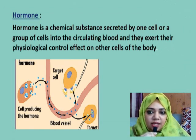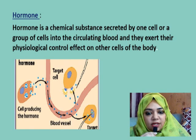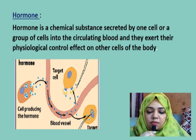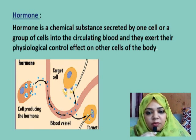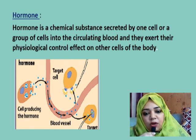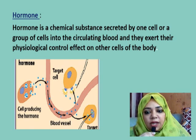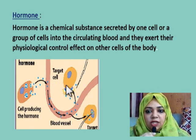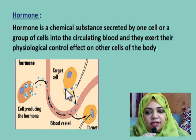A hormone is a chemical substance secreted by one cell or a group of cells into the circulating blood, and they exert their physiological control effect on other cells of the body. These hormones are secreted from the gland — which can consist of one cell or a group of cells — and when the hormone is secreted into the blood, it is carried throughout the body and then exerts its effect on other cells.